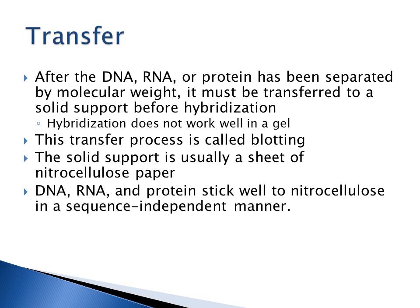After DNA, RNA, or protein is separated by molecular weight in the electrophoresis system, it is transferred to a solid support before hybridization — because probing doesn't work well in a gel. The process of transferring material to the membrane is the blotting step. A commonly used solid support is nitrocellulose paper, which looks almost like a piece of fine construction paper. DNA, RNA, and protein all stick well to nitrocellulose in a sequence-independent manner.